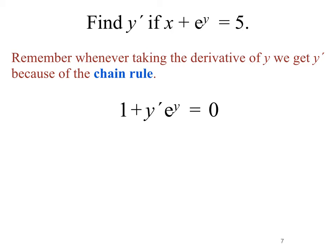Finally we need to solve for y prime because that's what we're looking for. We'll subtract 1 from both sides and divide by e to the y, so we get that y prime equals minus 1 over e to the y. If we like, we can rewrite that so it's not a fraction: minus e to the minus y.